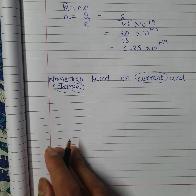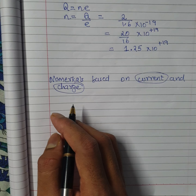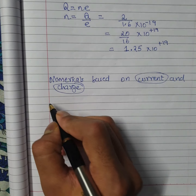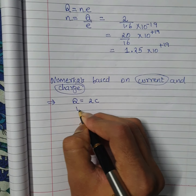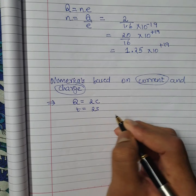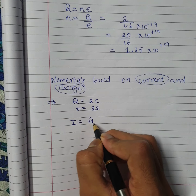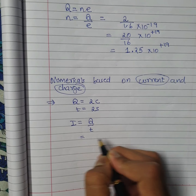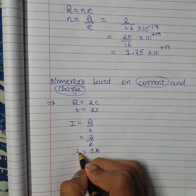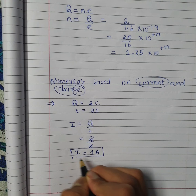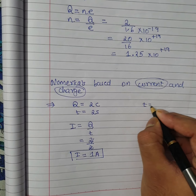A numerical based on current and charge: if charge flowing through a circuit is 2 coulomb and time is 2 seconds, find electric current. Formula: I = Q/T = 2/2 = 1 ampere. This is straightforward.